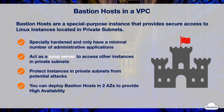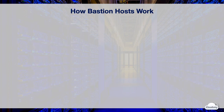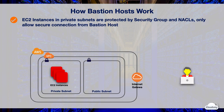For example, with a highly available architecture, in the event of one AZ failure, you don't lose access to the instances in private subnets. So how do bastion hosts work? Suppose you have EC2 instances in a private subnet — these instances are not accessible from the internet. Security groups and network ACLs restrict the inbound connection from the internet as additional layers of protection.